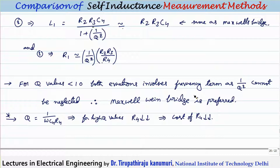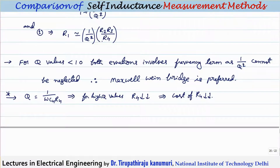The benefit of the Hays bridge over the Maxwell-Wien bridge is that in the Maxwell-Wien bridge, R4 increases drastically for Q > 10, making a large variable resistor difficult to obtain. In the Hays bridge, R4 appears in the denominator of the Q formula, so as Q increases, the required resistance value decreases — making a low-value variable resistor easy to obtain and more accurate.